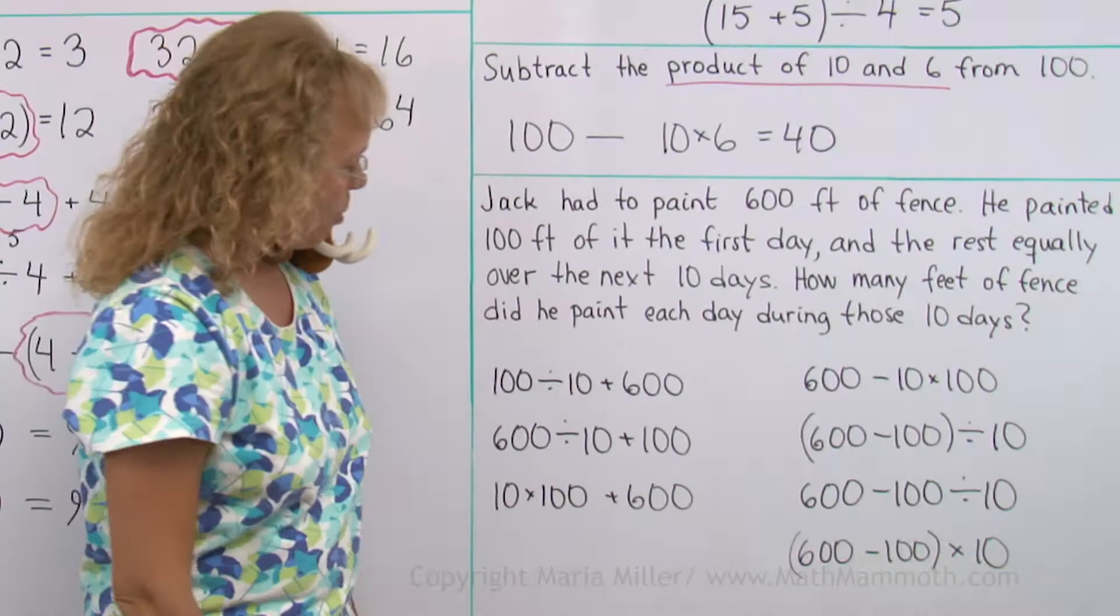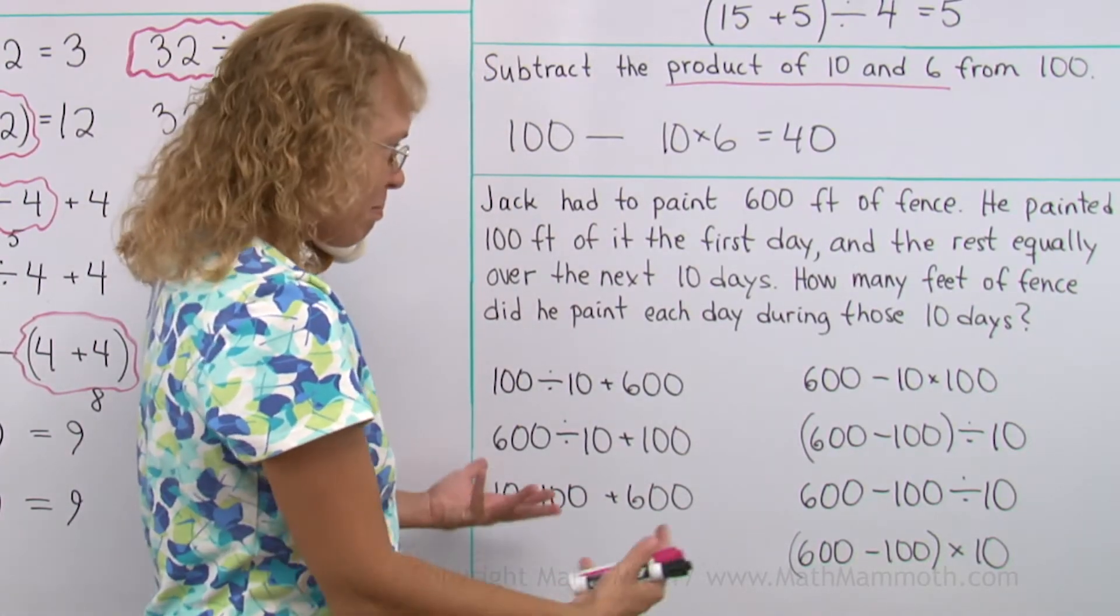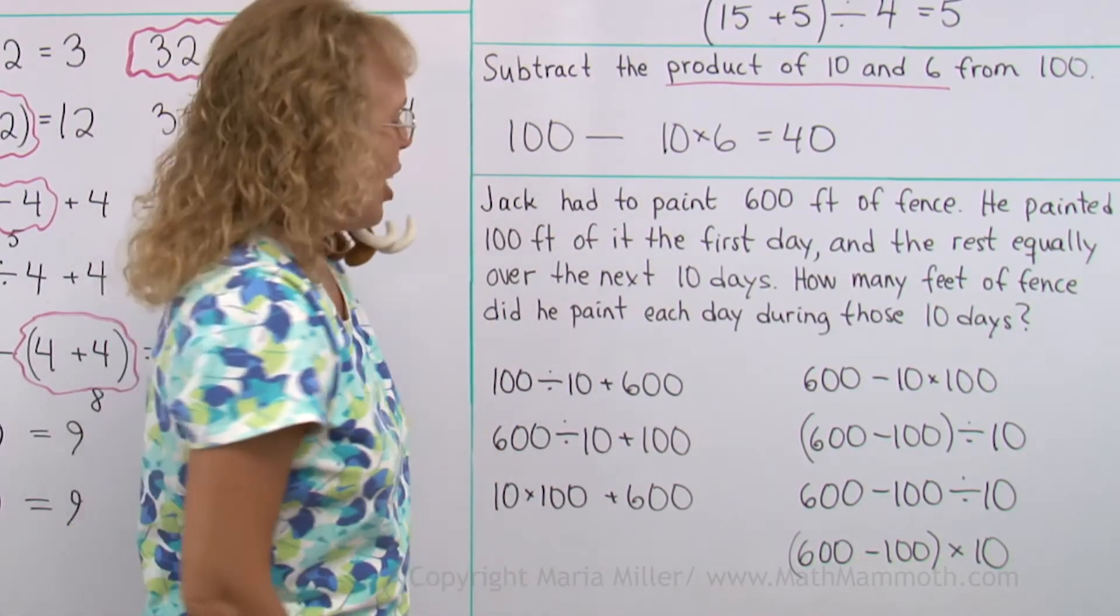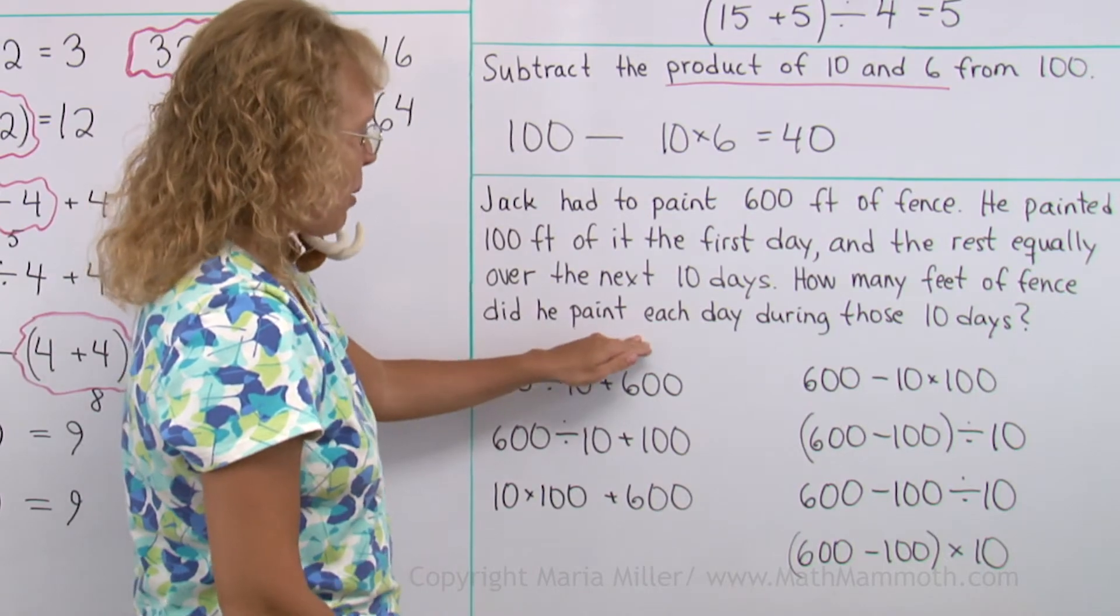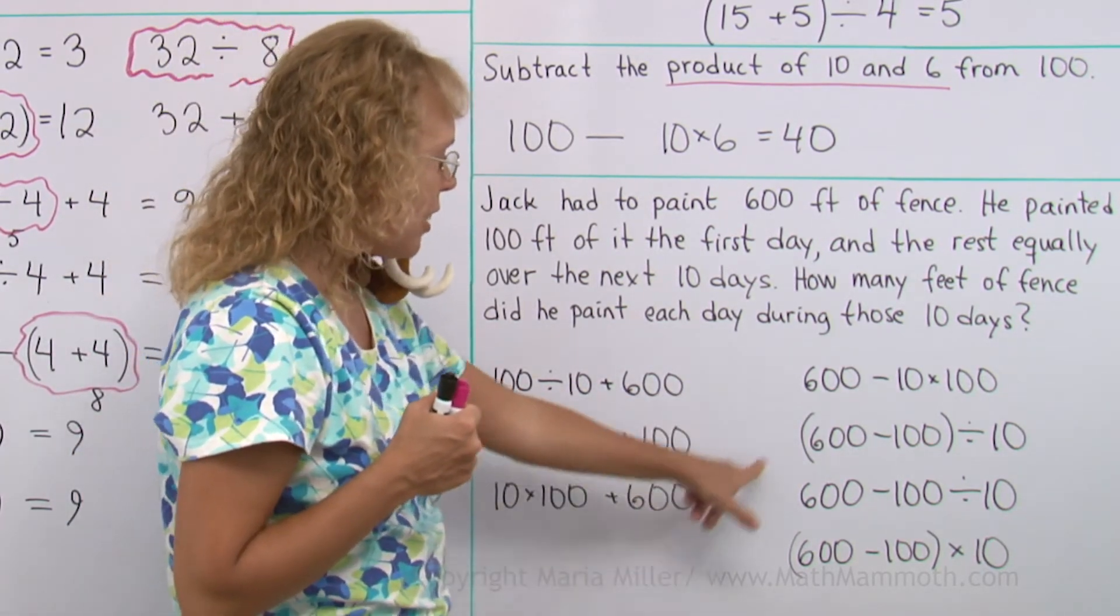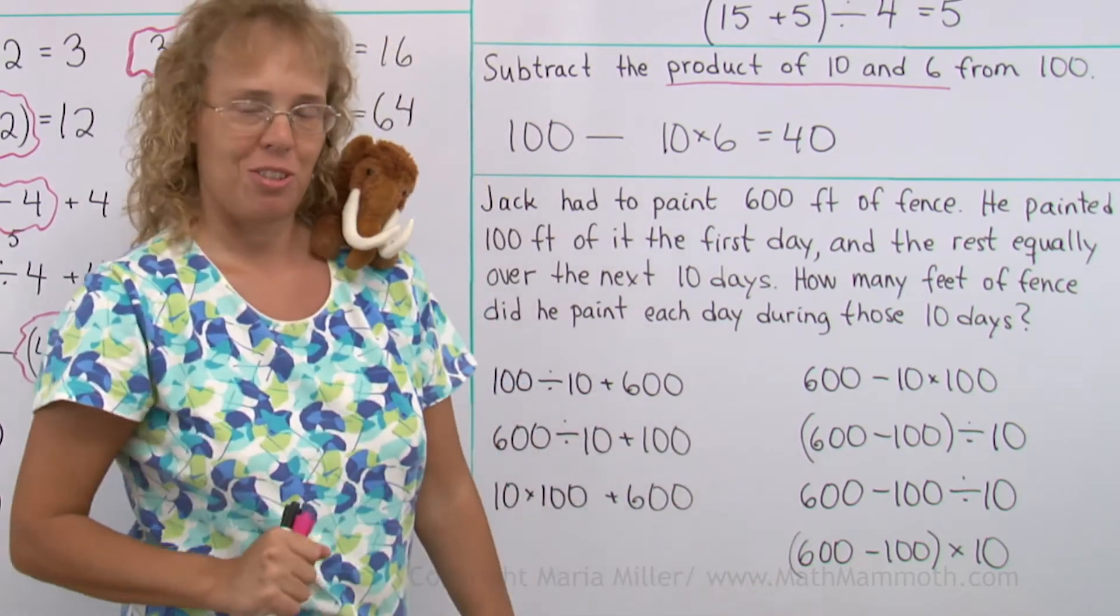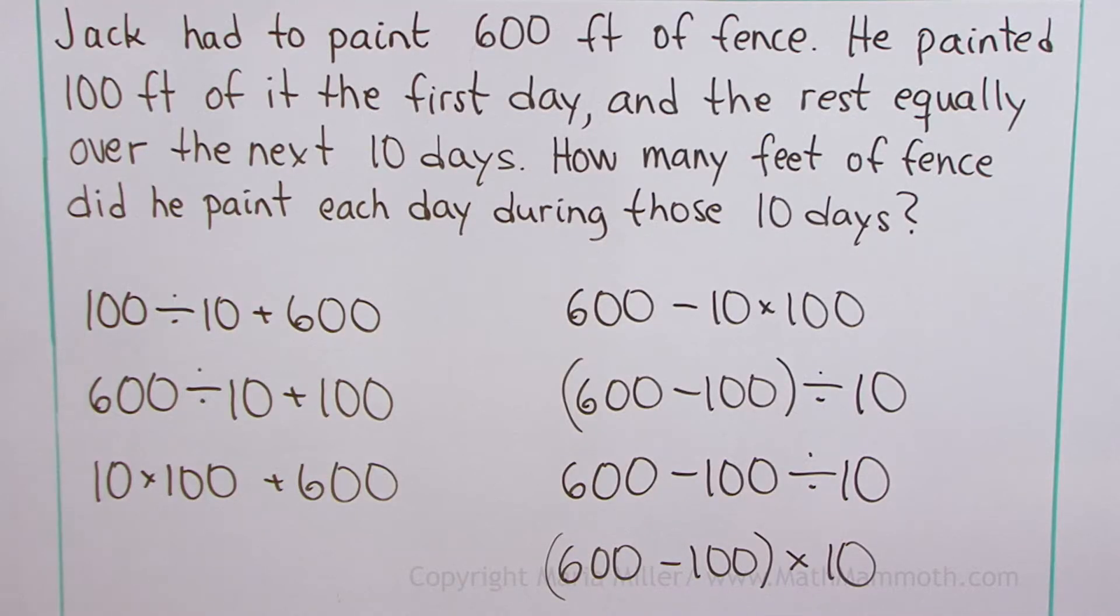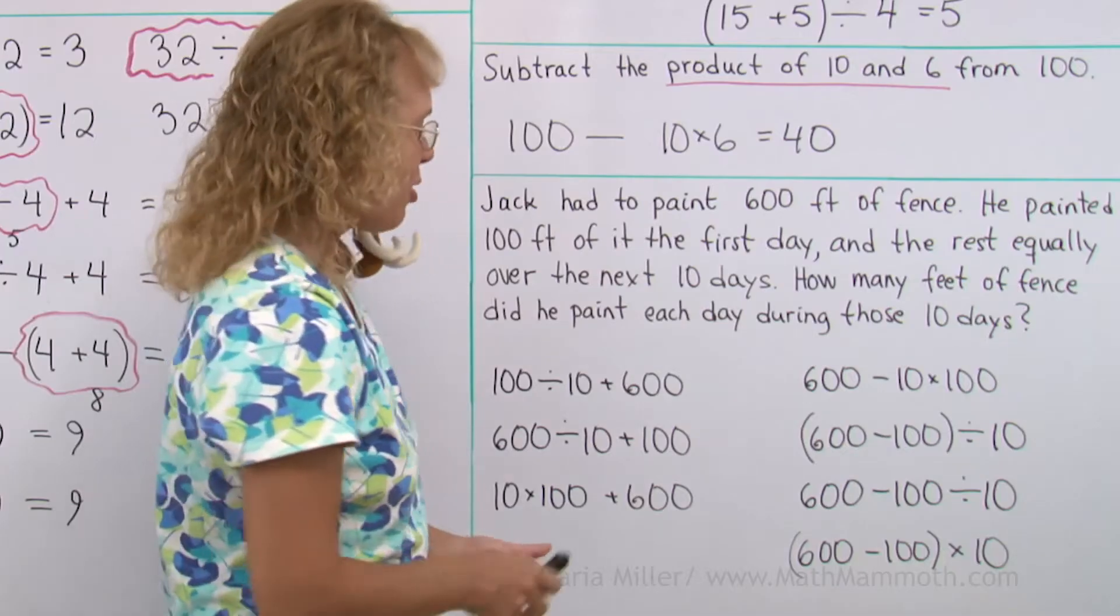Now this last problem might look difficult. What it is, is here's a word problem. And then after that, we need to choose which one of these is the correct calculation for it. Okay? So no, we're not going to calculate all these. There's only one that's correct.